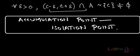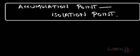A cluster point is also called an accumulation point. For a cluster point, we define that for every delta greater than 0, the delta neighborhood (c minus delta, c plus delta) intersection with A, minus c itself, is not equal to the empty set. That means this intersection contains some point excluding c.